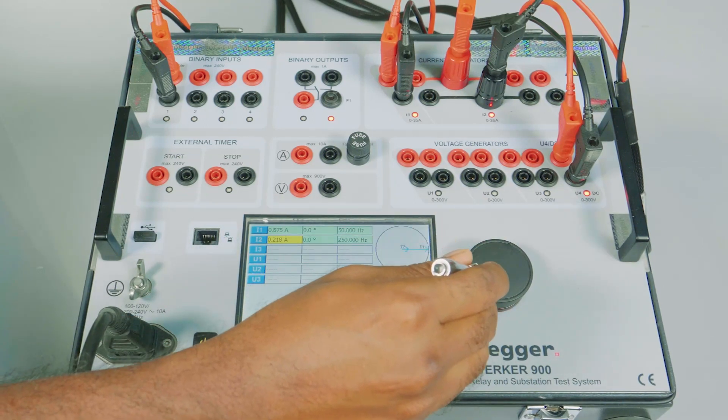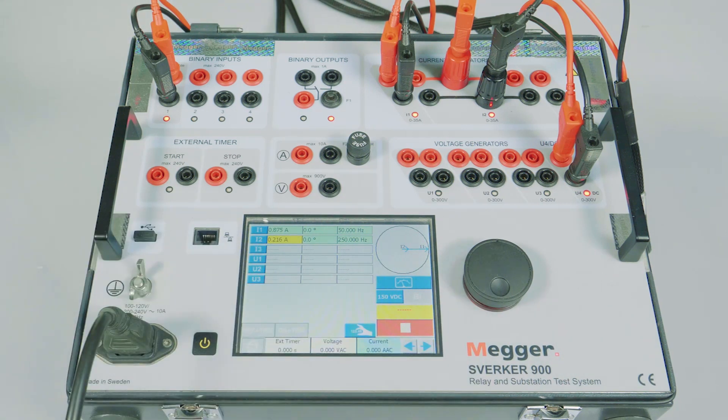So the dropout value is CT2 0.216 amps. Now let us take a ratio. CT2 divided by CT1, that is 0.216 divided by 0.875 equals 24.68 percent. This confirms the fifth harmonic test in line with the settings.